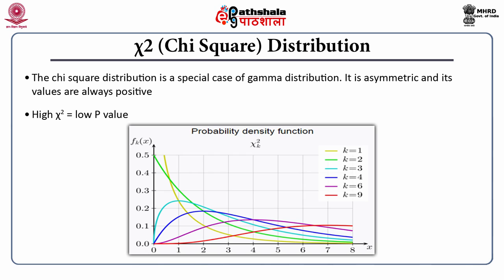If the degree of freedom is one, the distribution is typically L-shaped. As you can see in this slide, the yellow one is kappa equal to one. As you increase it, the distribution peaks up. The chi-square distribution is a special case of gamma distribution. It is asymmetric and its values are always positive. If you get a high chi-square, the p-value is going to be low; if you get a low chi-square, the p-value is going to be high.